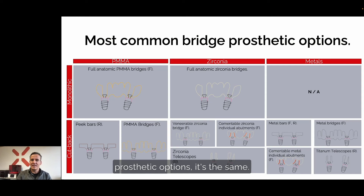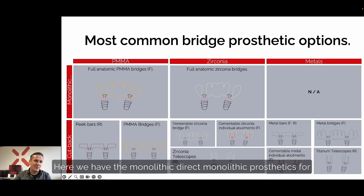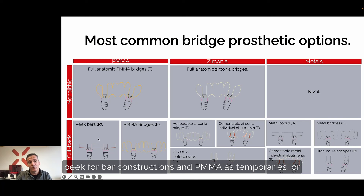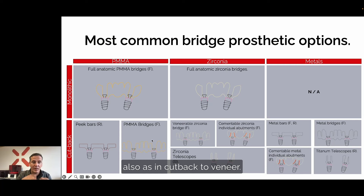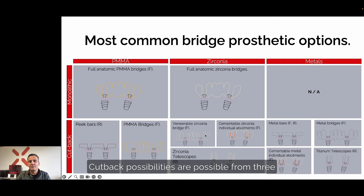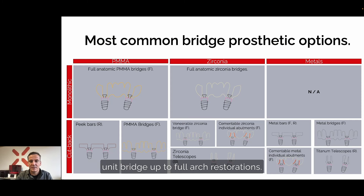Looking at the most common bridge prosthetic options, we have monolithic direct prosthetics for bridges. In PMMA we can also use, for example, PEEK for bar constructions, and PMMA as temporaries, or also as a cutback and to veneer. In a temporary situation, zirconia as a final restoration monolithic is also possible, and cutback possibilities are available from three-unit bridges up to full arch restorations.